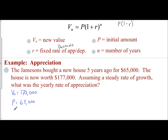Our rate is what we're trying to find, so I'll put a question mark. N is the number of years, which is five years. Now that I have all the information, I can plug it into my formula. So V sub n, which is $177,000, equals the initial amount, $65,000, times one plus R, to the n power, which was five.